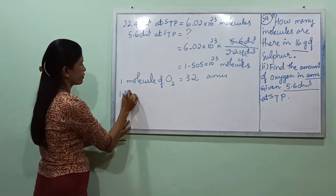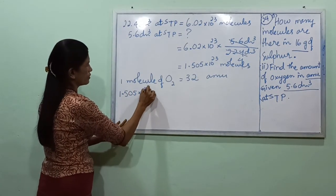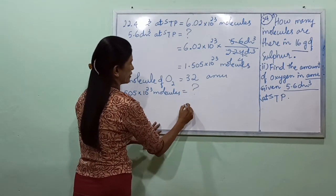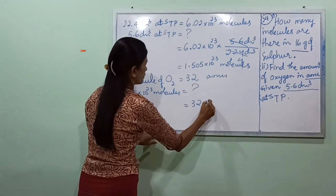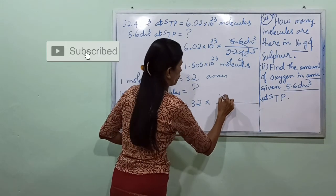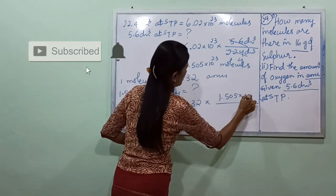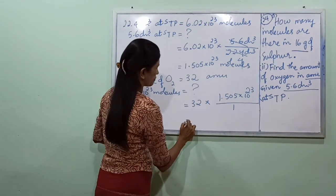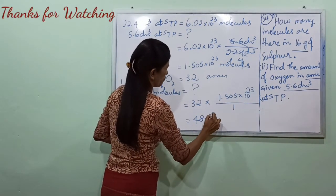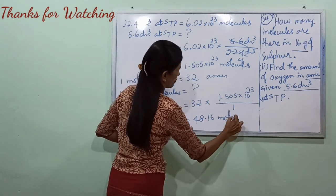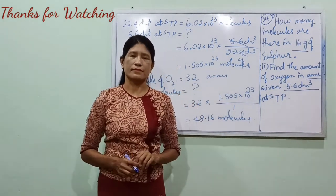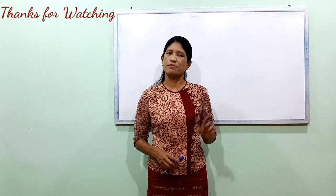1.505×10²³ molecules of O₂ equals the mass in AMU. See you next lesson. Bye-bye.